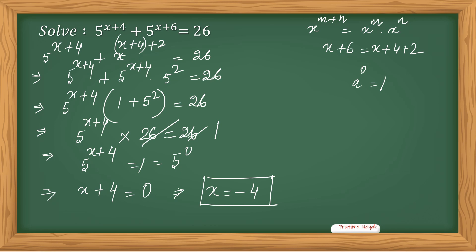We can verify once. 5 raised to the power minus 4 plus 4 plus 5 raised to the power minus 4 plus 6. This equals 5 raised to the power 0, which is 1.